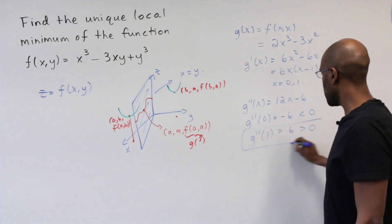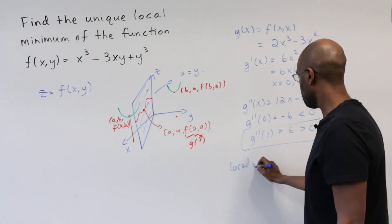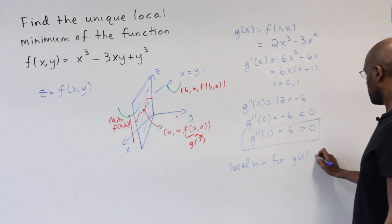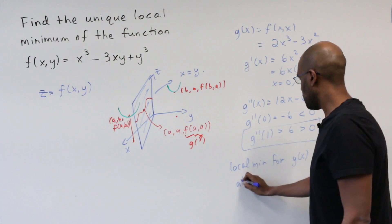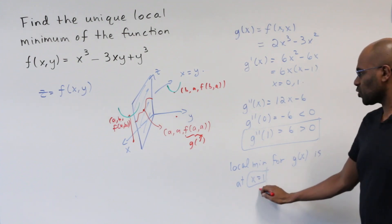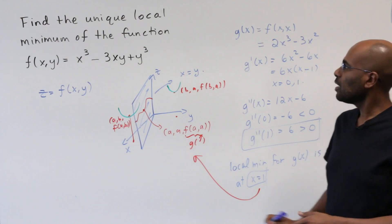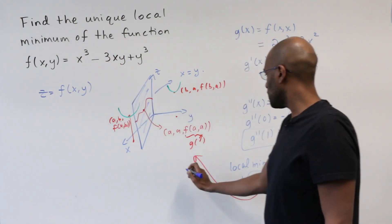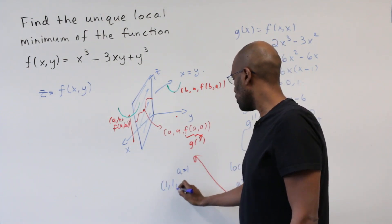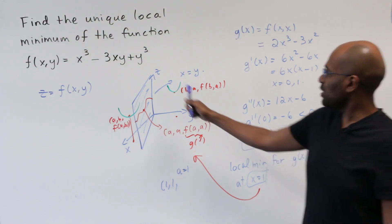So here is where we get our local minimum, and so the only local min for the function g is at x equals 1, which means if we go back to our picture over here, that the only possible local min of this particular function happens when a is 1, and that's at the point 1, 1, and our value for f at that point will be negative 1.